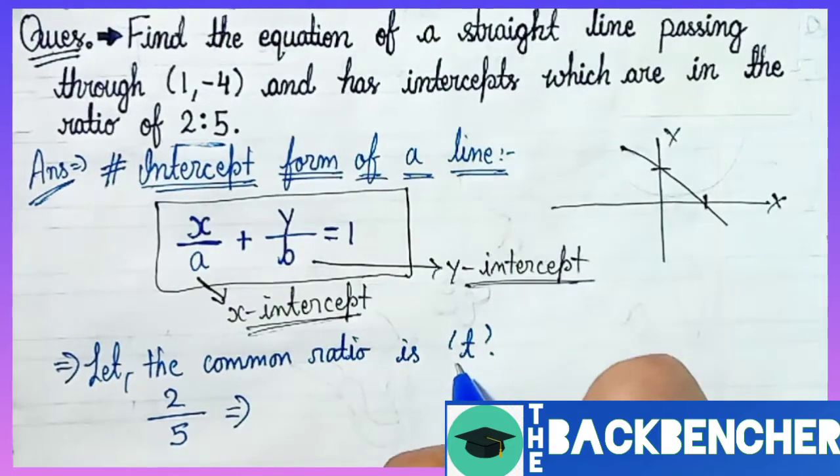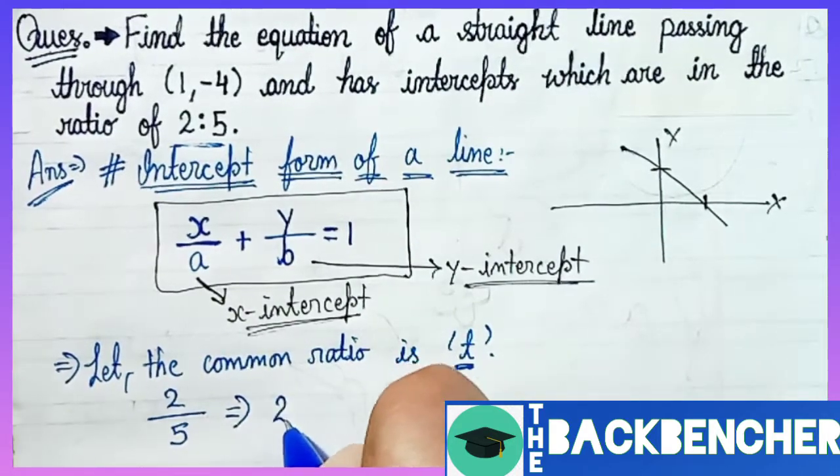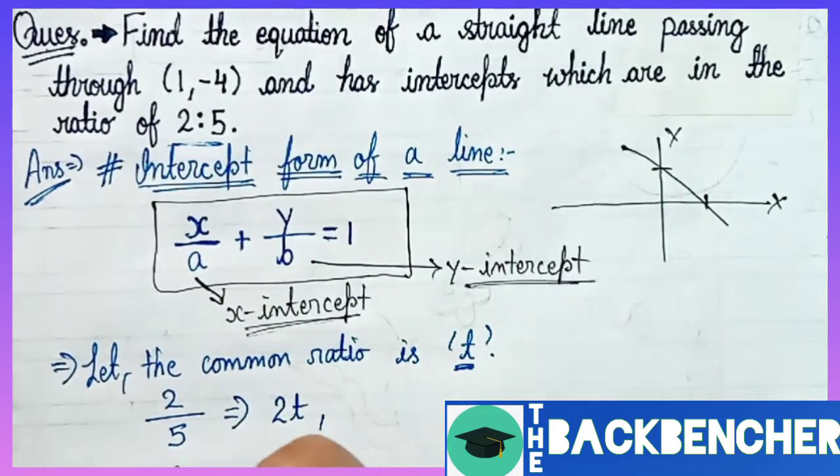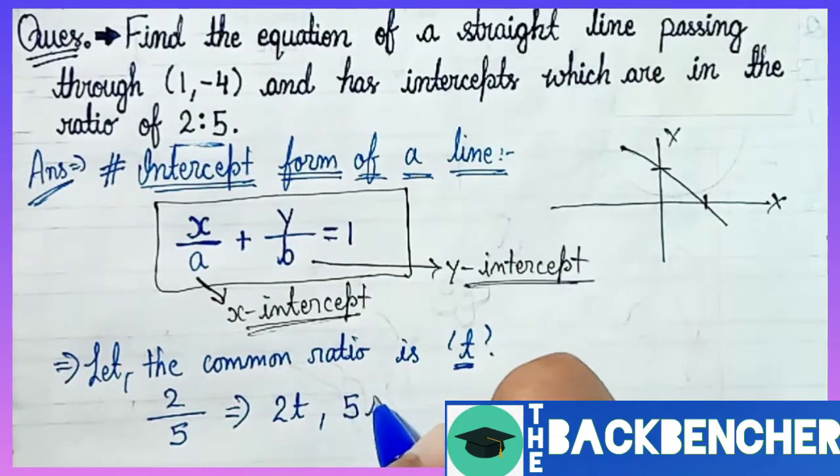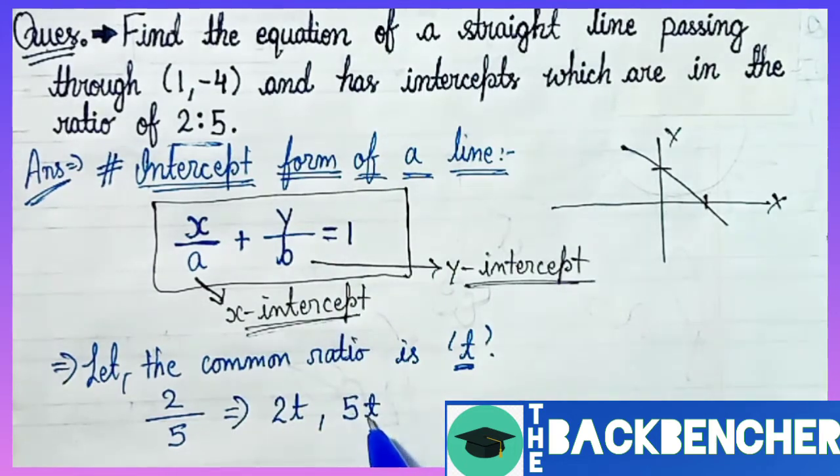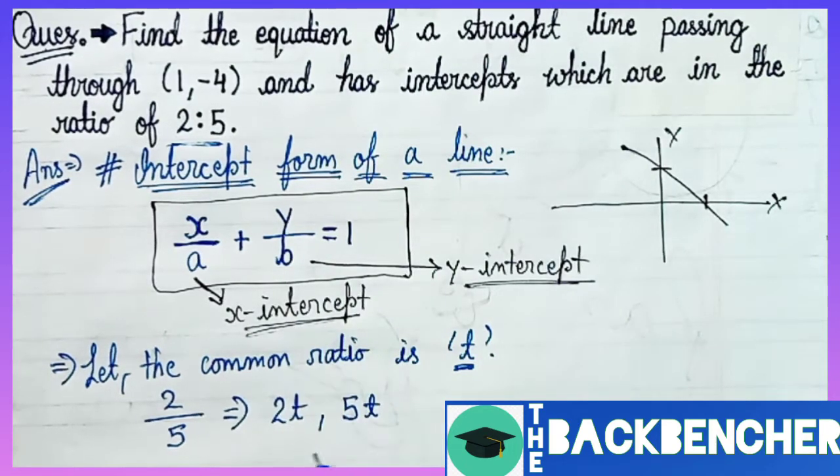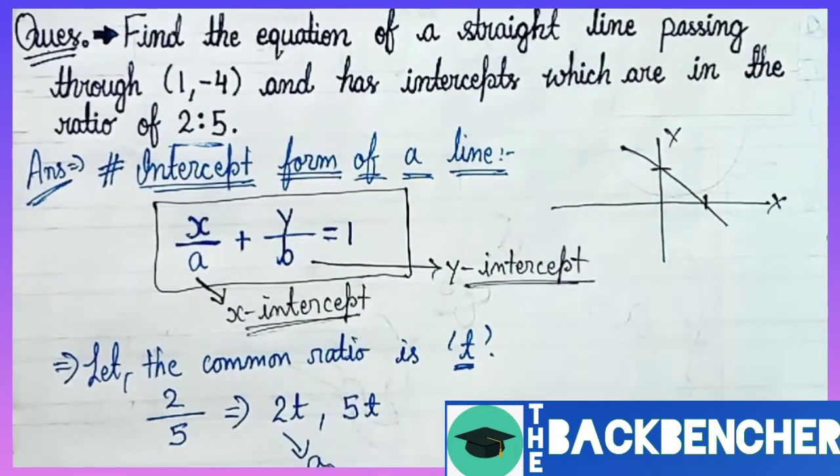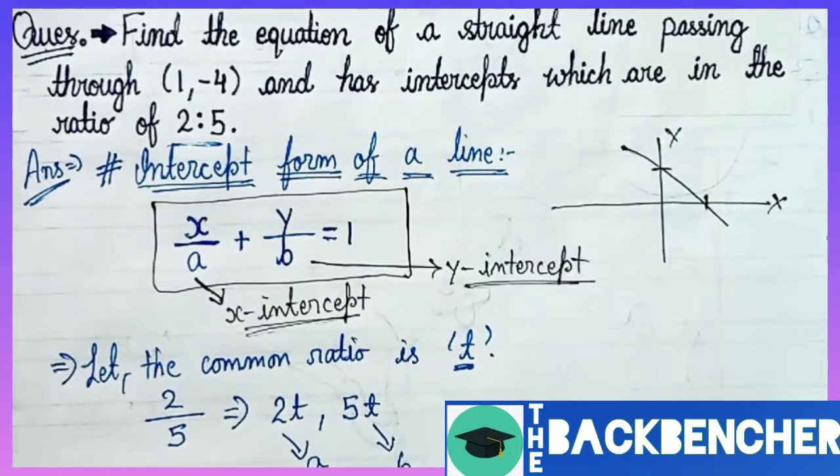Then a will be 2 multiplied by t, because the common ratio is t. So 2t is our a, which we call x-intercept. Now, 5t is our b, which we call y-intercept. Again, 2t is the x-intercept and 5t is the y-intercept, which we're calling b.